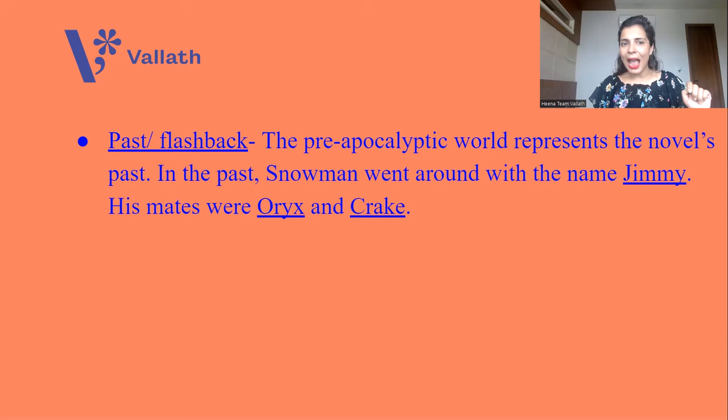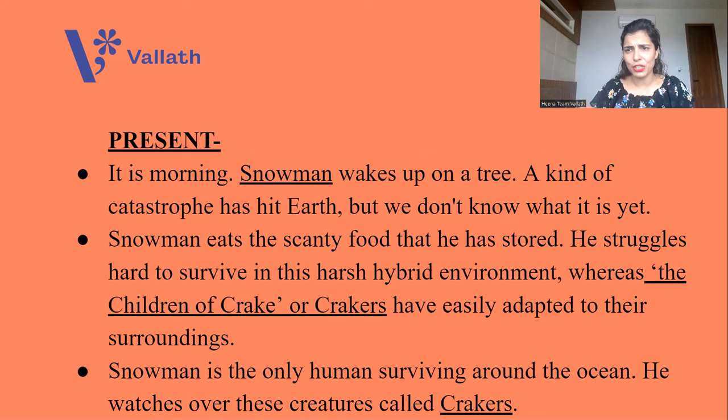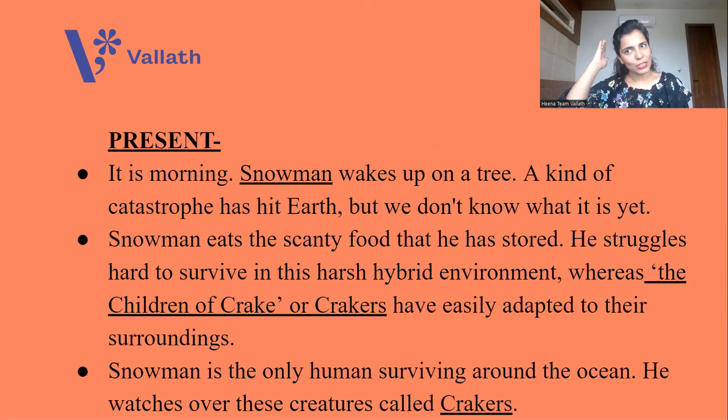In the past, Snowman went around with the name Jimmy, and his mates in the past were two people named Oryx and Crake. Crake is a man; Oryx is a woman. We will know everything about Oryx and Crake and a lot about Snowman and Crakers. Let's move along with the summary of the novel Oryx and Crake.